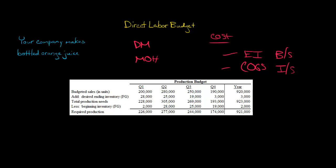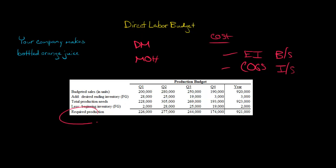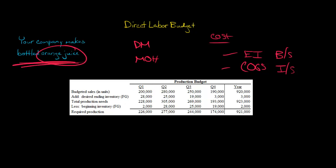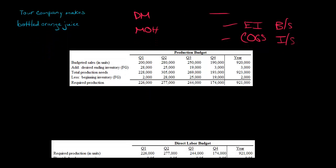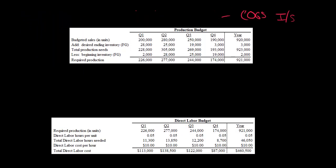Let's say the company makes bottled orange juice. We're going to have to start with a production budget before we can make our direct labor budget, because we need to know the required production of each period. In this case, I've got it on a quarterly basis, but a company could also do it on a monthly basis. For quarter one, required production is 226,000 bottles of orange juice.